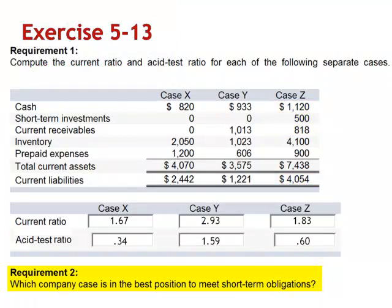So of the three companies, the company in the best position to meet their short-term obligations is company Y, with an acid test ratio of 1.59. Even when we exclude the inventory and prepaid expenses, the quick current assets are more than enough — $1.59 for every dollar in current liabilities.